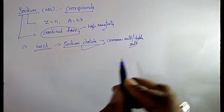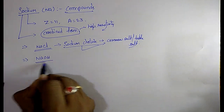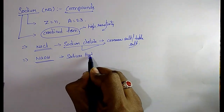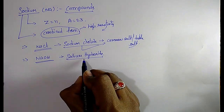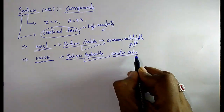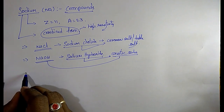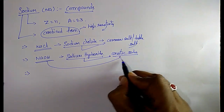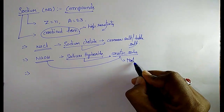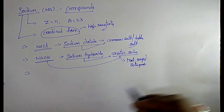The next compound is sodium hydroxide (NaOH). This is also called caustic soda — very very important friends. NaOH is caustic soda. Coming to the uses of caustic soda — sodium hydroxide is used in the manufacturing of soaps and detergents.